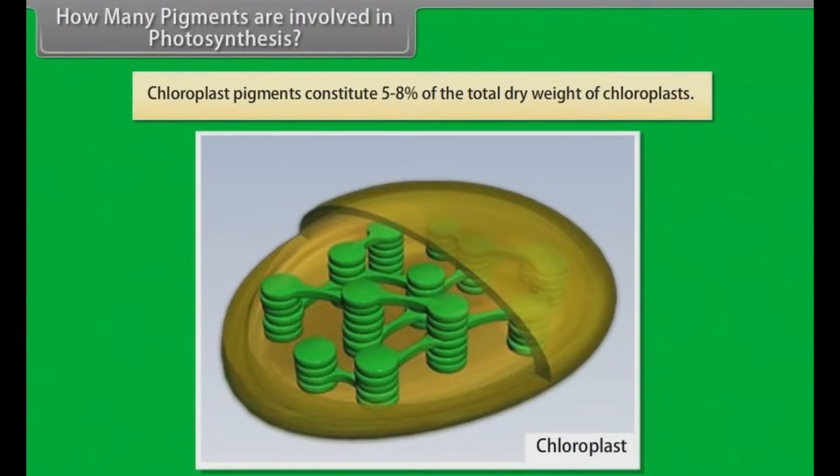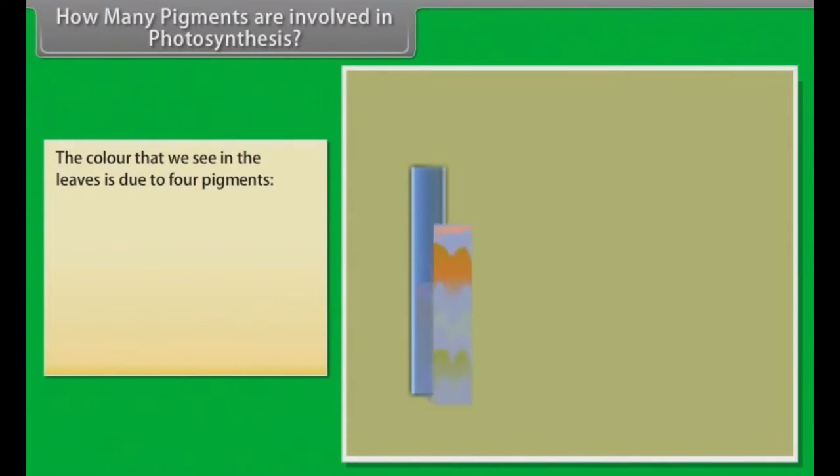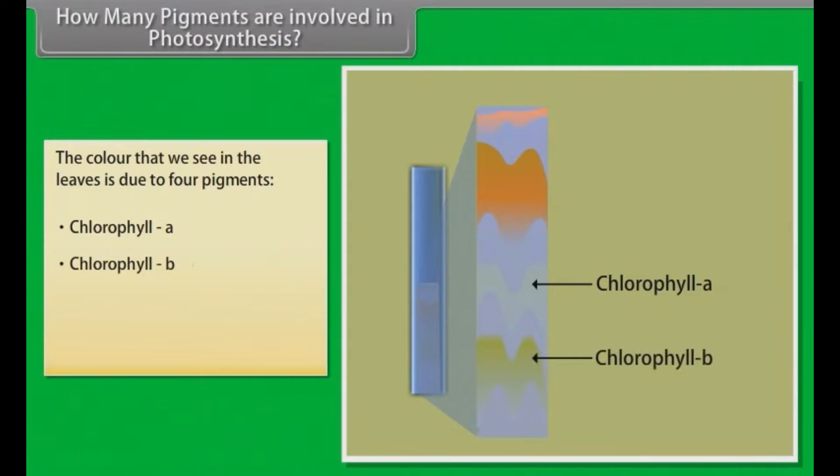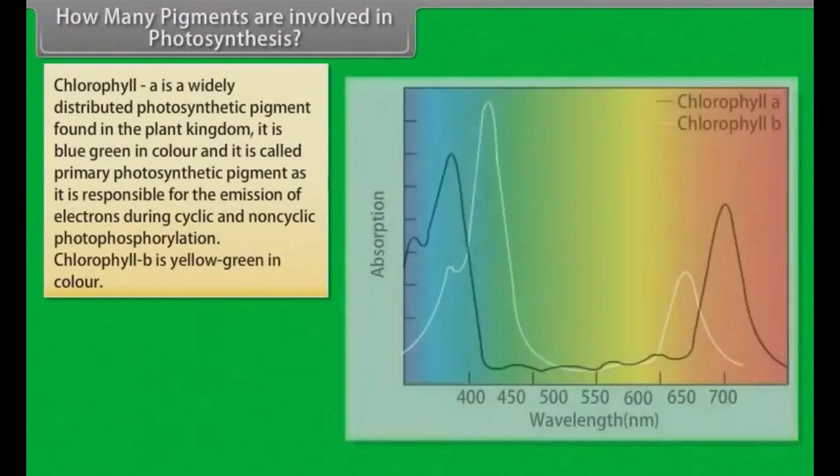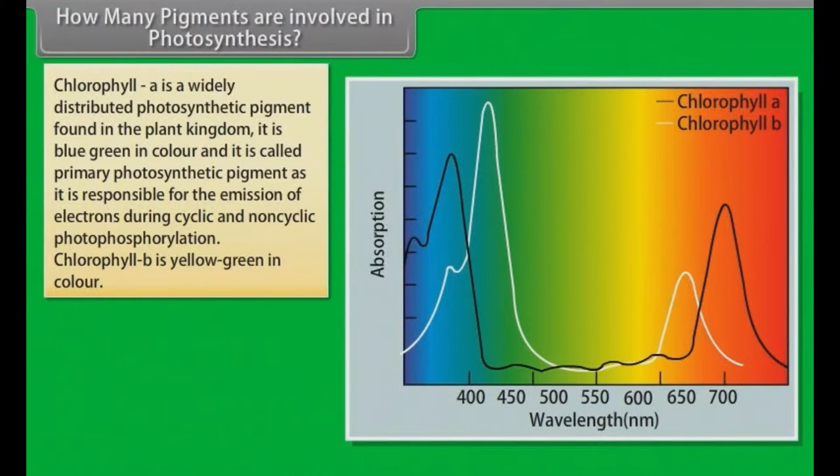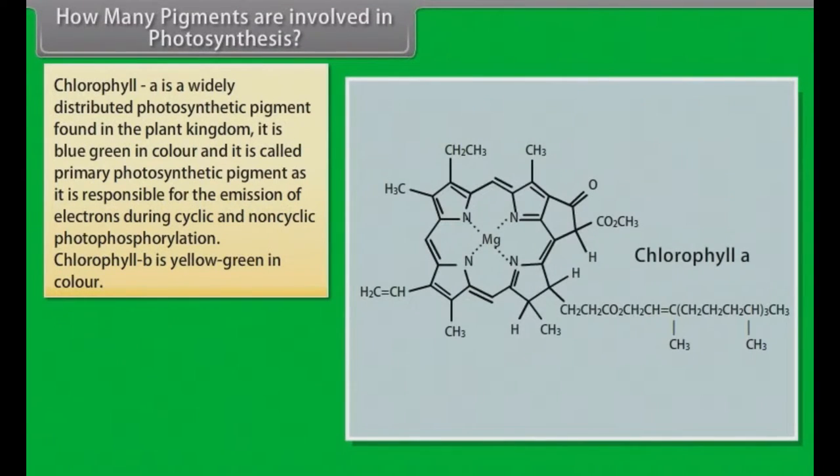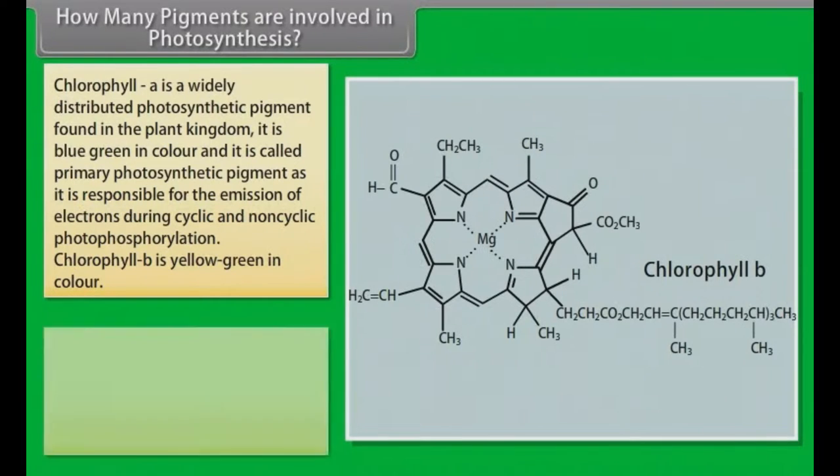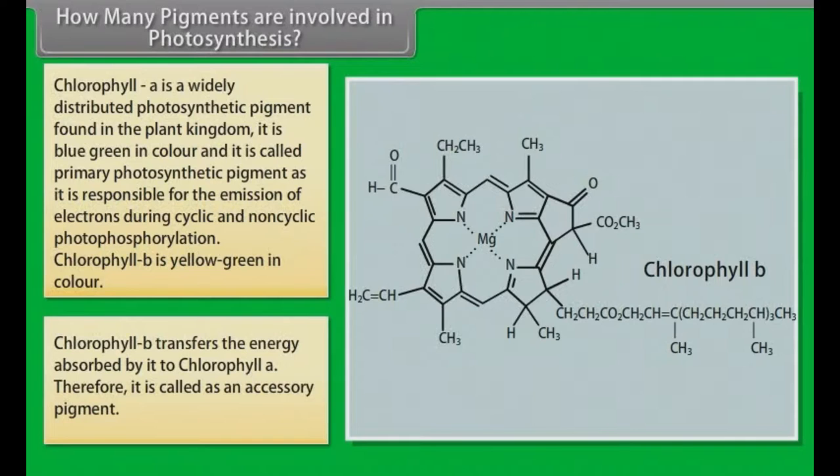Chloroplast pigments constitute 5-8% of the total dry weight of chloroplasts. The color that we see in the leaves is due to four pigments. Chlorophyll A is a widely distributed photosynthetic pigment found in the plant kingdom. It is blue-green in color and is called primary photosynthetic pigment as it is responsible for the emission of electrons during cyclic and non-cyclic photophosphorylation. Chlorophyll B is yellow-green in color. It transfers the energy absorbed by it to chlorophyll A. Therefore, it is called an accessory pigment.